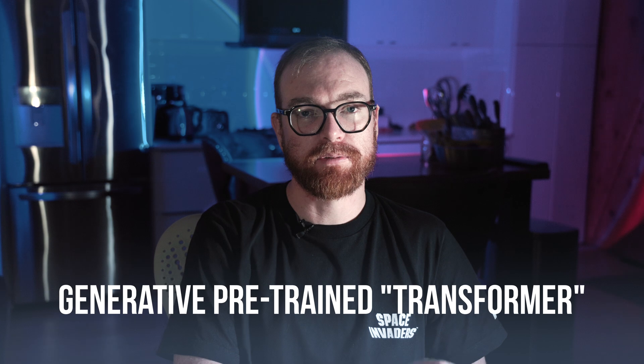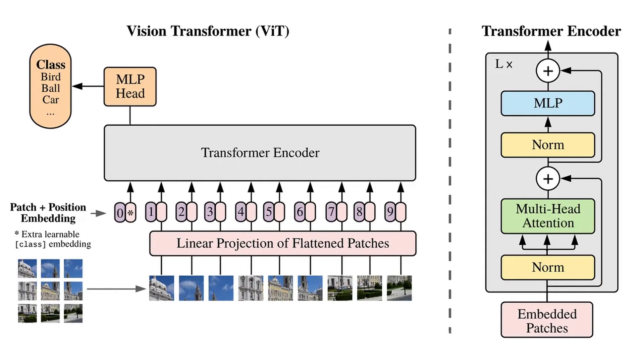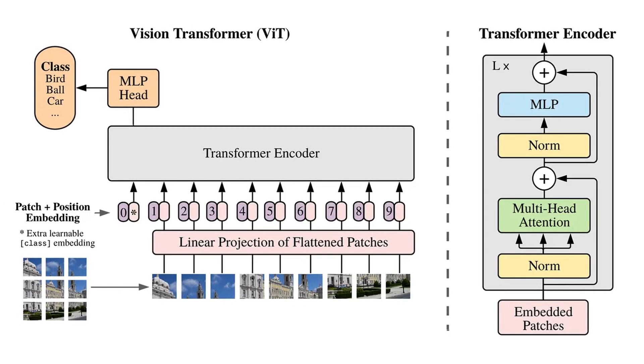Yes, that same transformer from GPT — Generative Pre-trained Transformer — and that same diffusion from Stable Diffusion. I already talked a lot about diffusion models in my Mid-Journey series, so make sure to watch it to learn more. But Sora doesn't just generate an image, it generates a video. So how does it do that? Building on top of the regular diffusion process, Sora uses something called space-time patches.